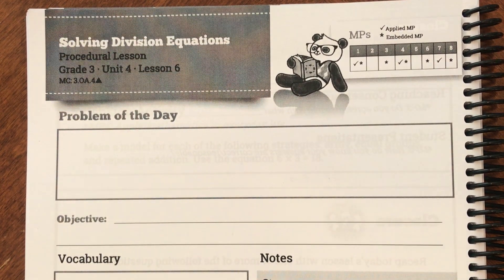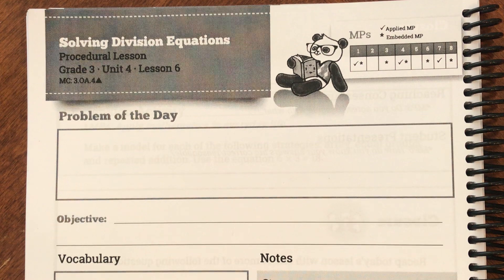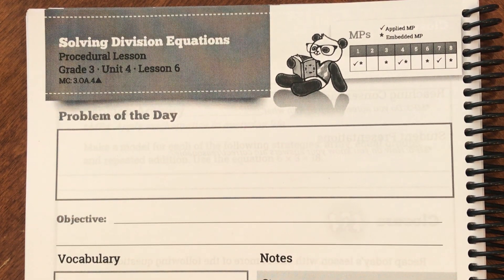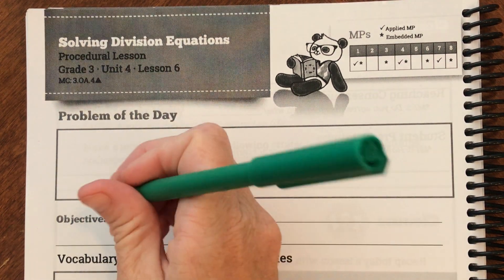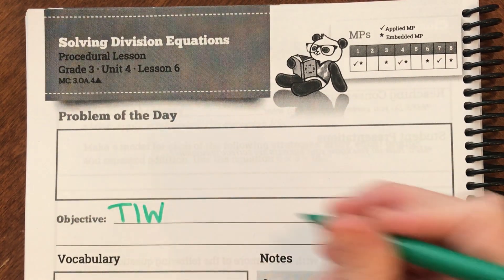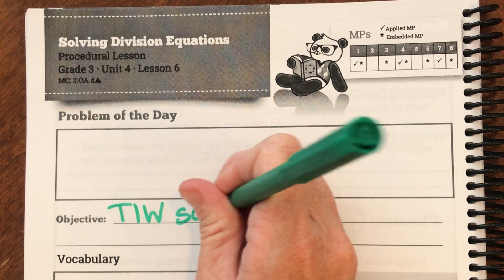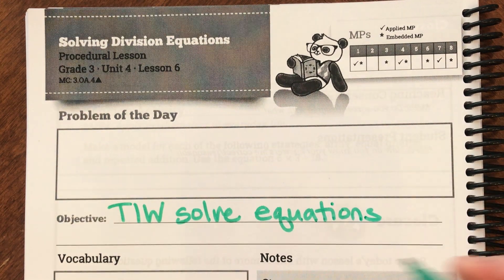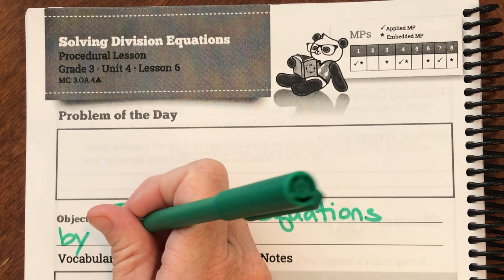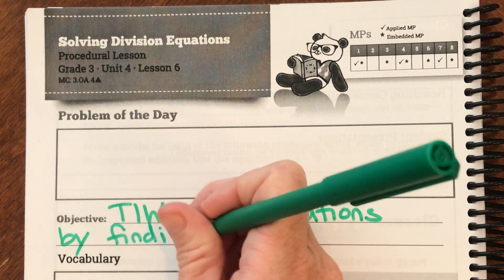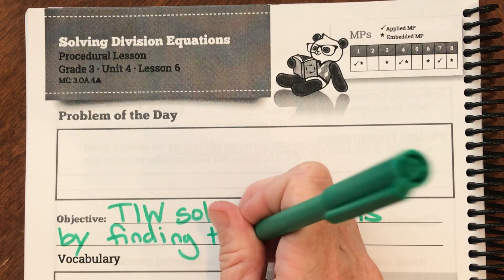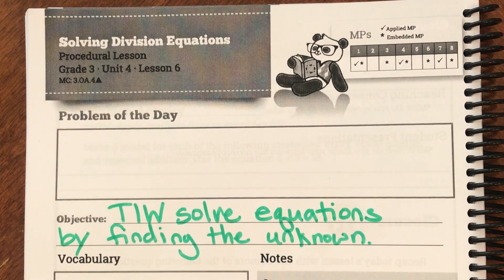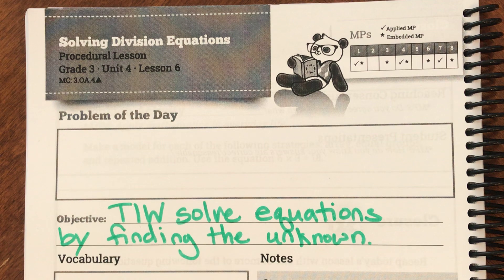Good morning, third graders. Today we are on page 251 of your student journal. Our objective today is: today I will solve equations by finding the unknown.